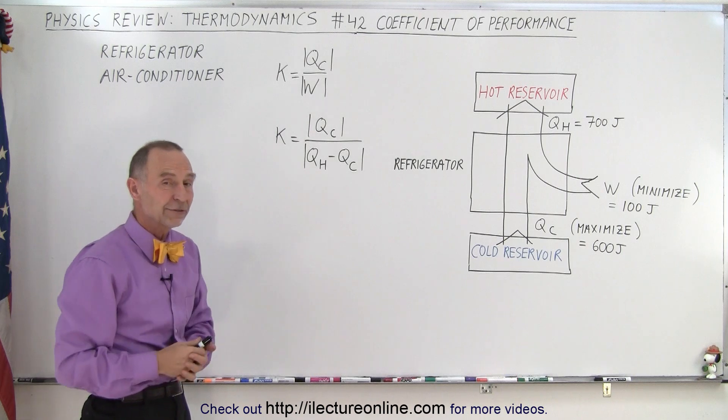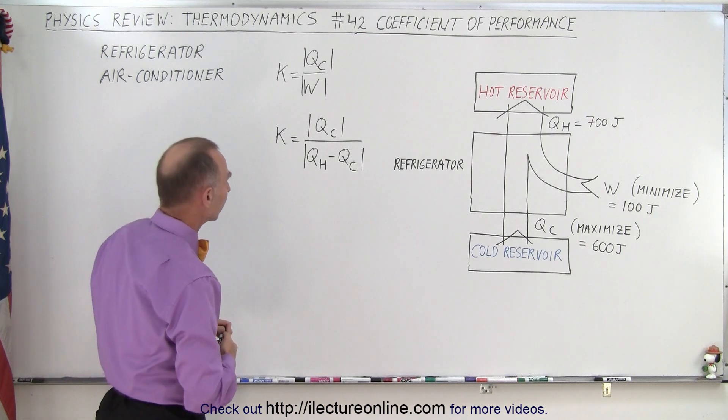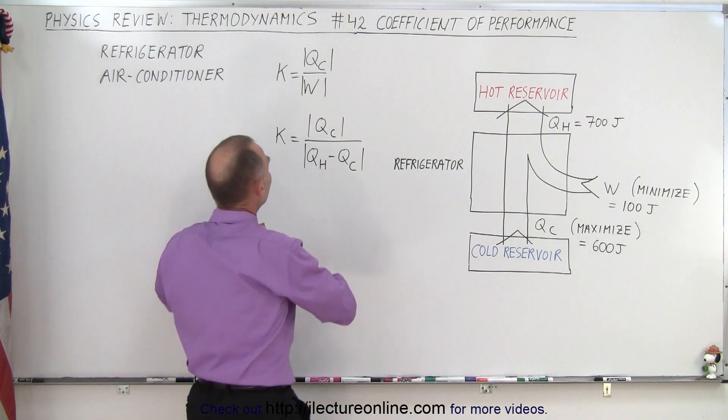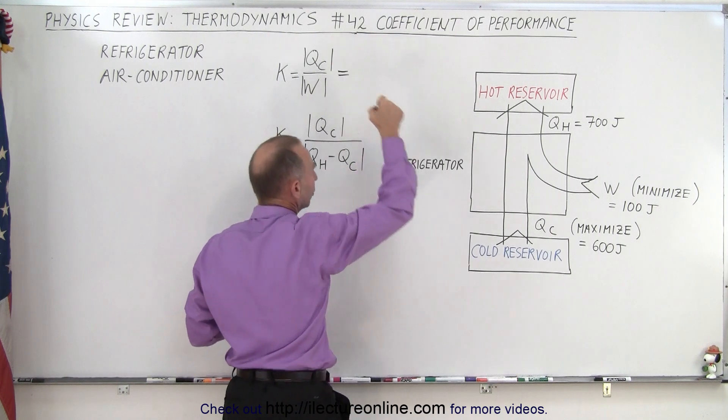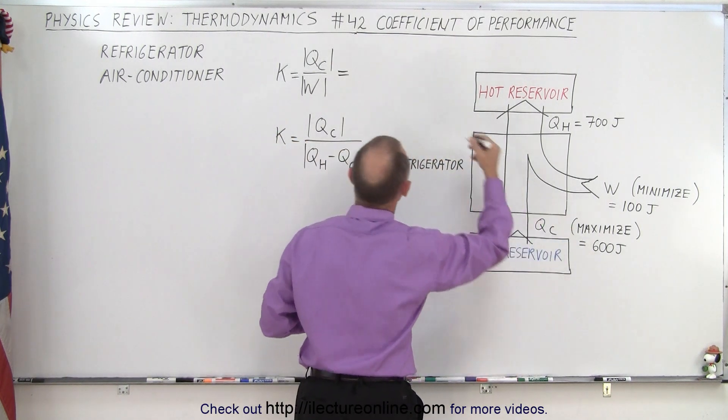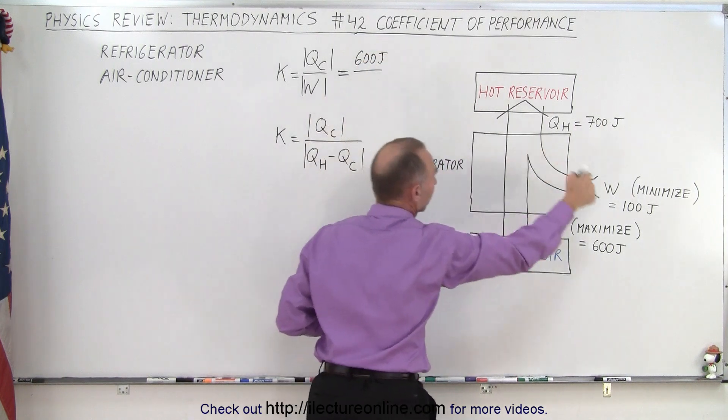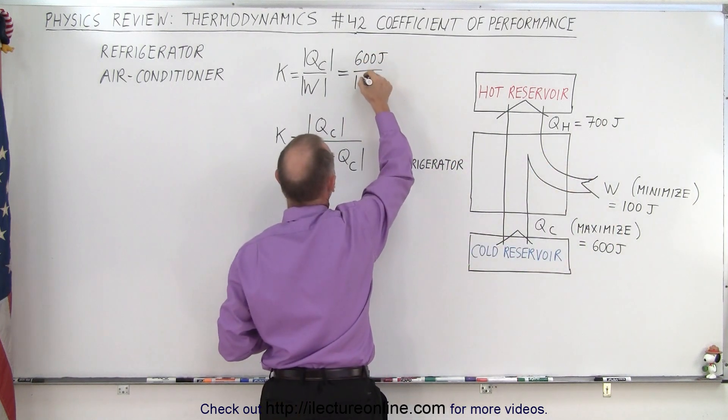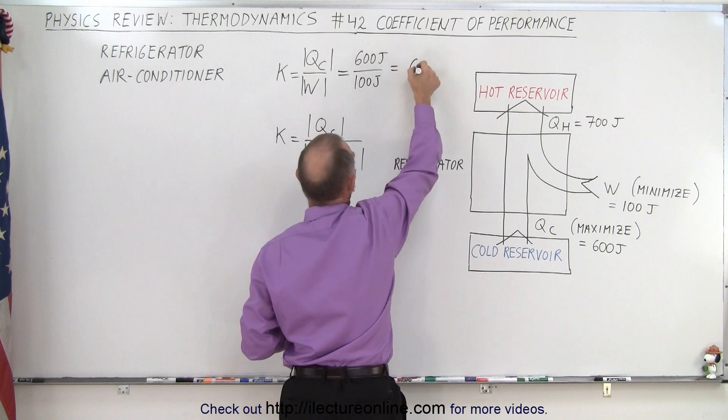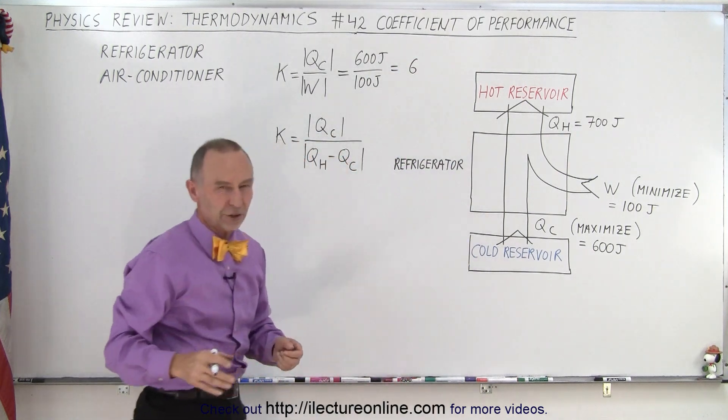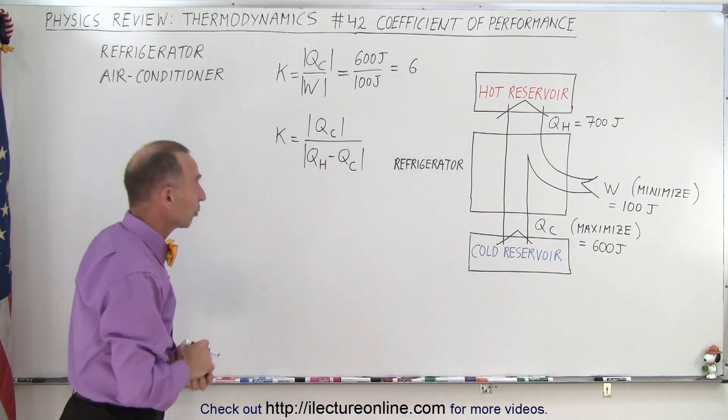Now with the numbers given, we will quickly calculate what that is in our example. So in this case, we say that the cold is 600 joules and the work done is 100 joules. So that means we get a coefficient of performance of 6, which is pretty good, although we try to do better than that.